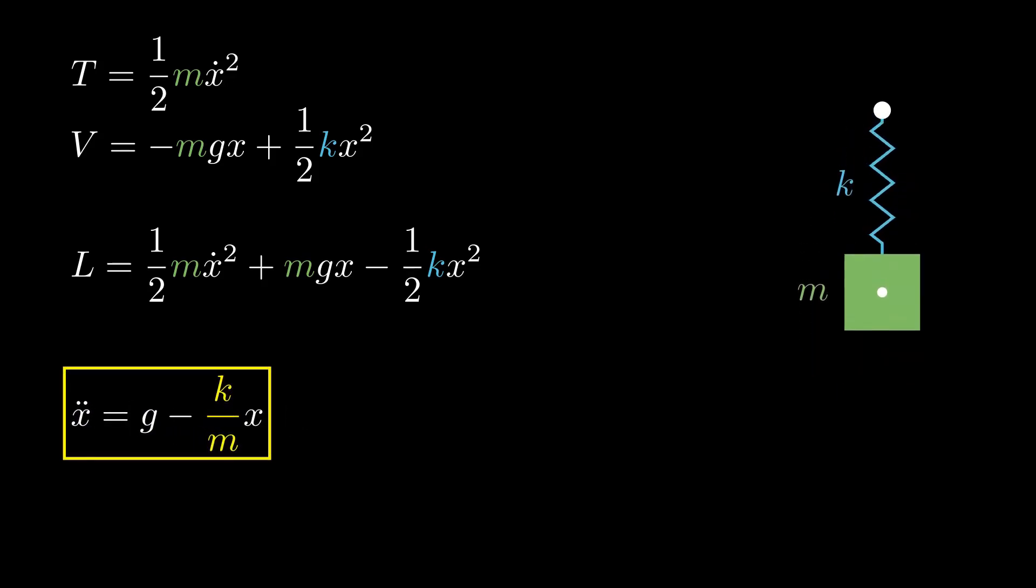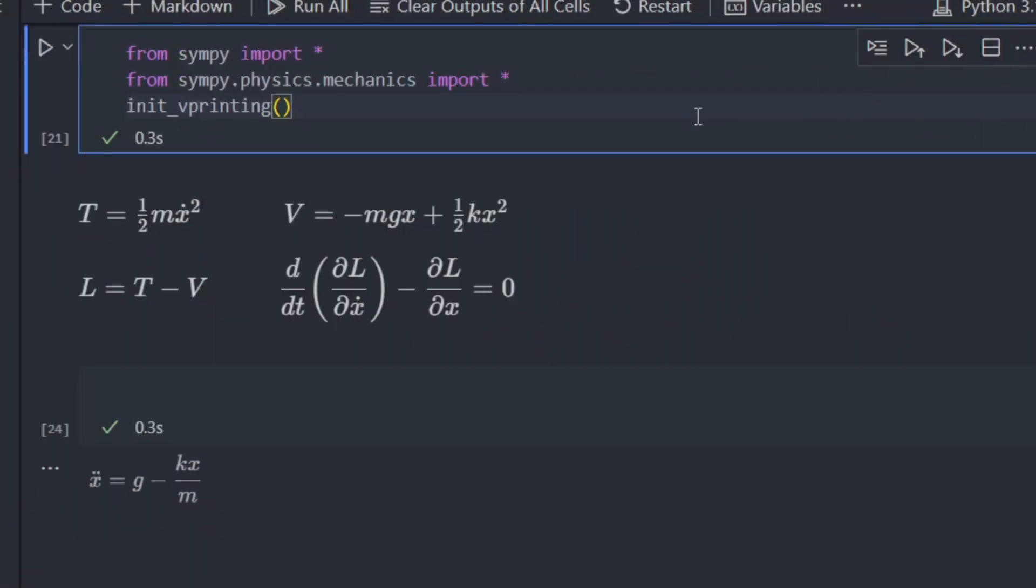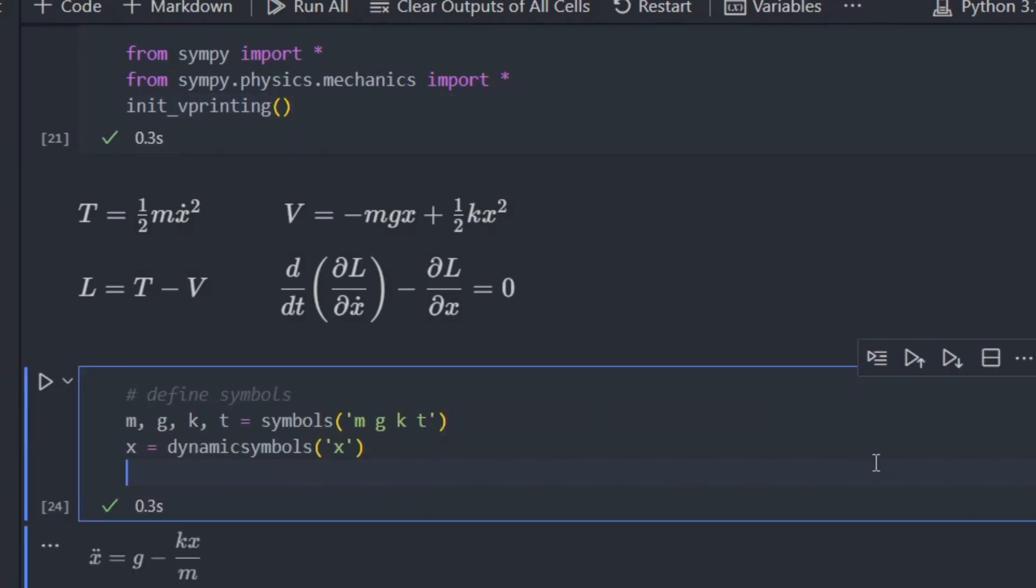Now, let's go ahead and double check our work with a simple Python script. Let's get started by importing SymPy and then enabling LaTeX output. Now we'll define some symbols. We have m, g, k, t and x. And x is a function of time, so we need to use dynamic symbols.